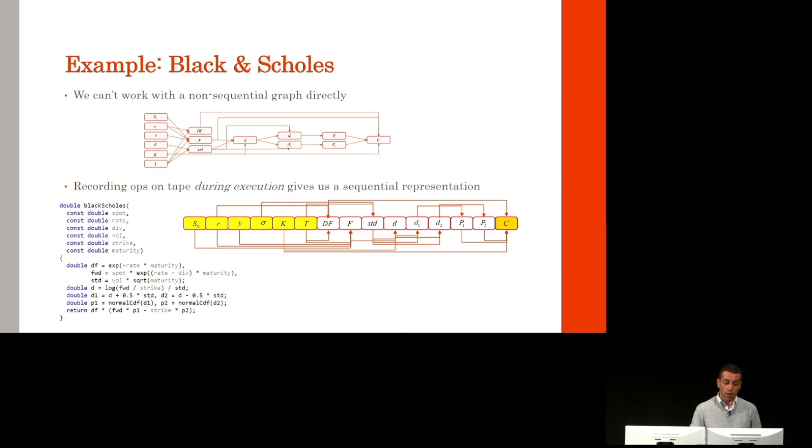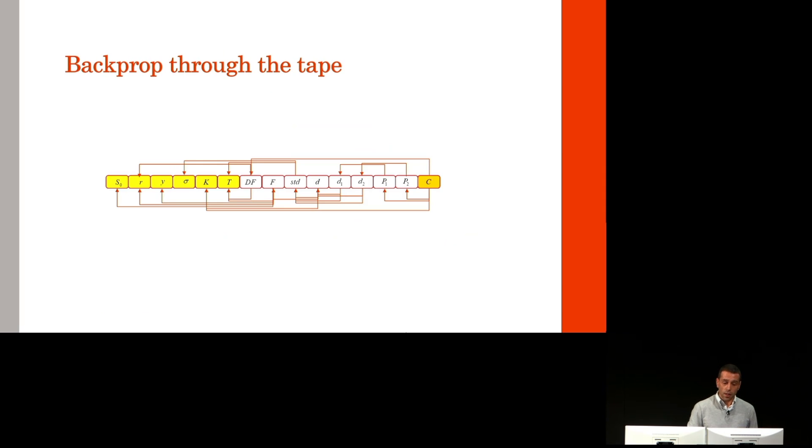In our Black-Scholes example, we can't work directly with a non-sequential graph. But if we record the ops on tape during execution, we get it in a flat sequential format, which makes it easier to backpropagate. Seed with the differential of a call price to itself, which is obviously 1, apply adjoint equations right to left through the tape, and calculate the differentials to all the inputs in one single pass.